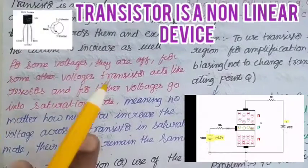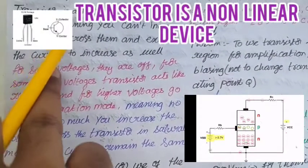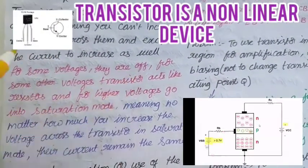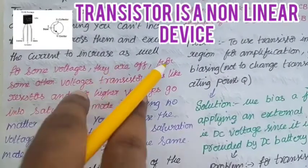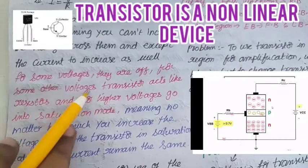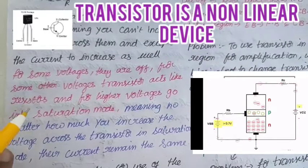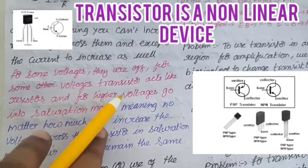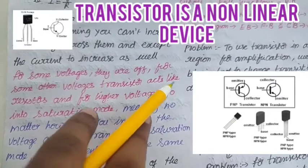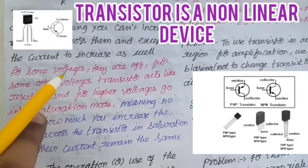For some voltages, transistor will be off. Then how much current we supply, it won't take. For other voltages, transistor will behave like a normal resistor. And for higher voltages it will go into saturation mode, that is conduction mode.